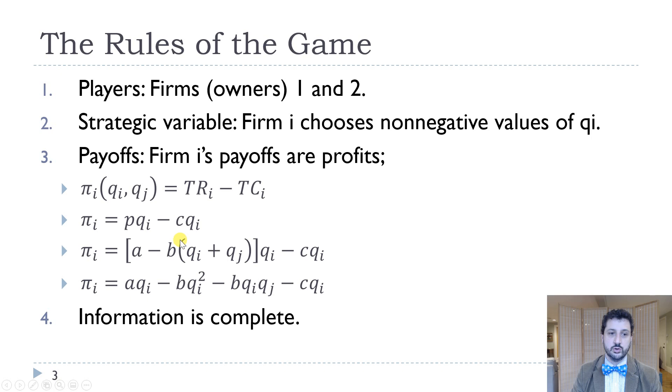And so profit is just equal to total revenue minus total costs. We put in P times Q minus C times Q. Now, the big difference here, as opposed to our monopoly problem, is that now the price depends not only on how much I produce, QI, but also on how much you produce, QJ. So price is A minus B times capital Q, which is QI plus QJ times QI, so that gives us the revenue, minus CQI, that gives us the cost. And so when we distribute the QI through, we just get AQI minus BQI squared, that's the same as monopoly, but then we have this extra term, minus BQI QJ minus CQI.